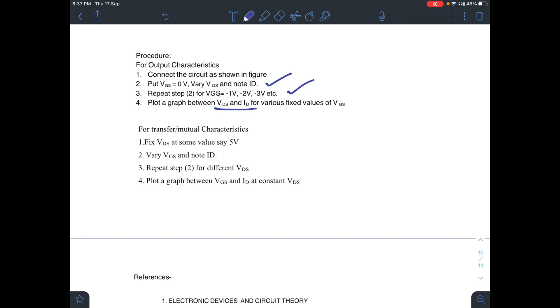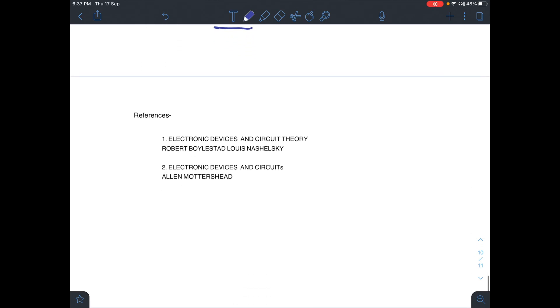For transfer characteristics, you have to fix VDS and vary VGS and note ID. You have to plot a graph between VGS and ID at constant VDS. The references used in this video are taken from electronic devices and circuit theory by Boylestad and Nashelsky. Thank you.